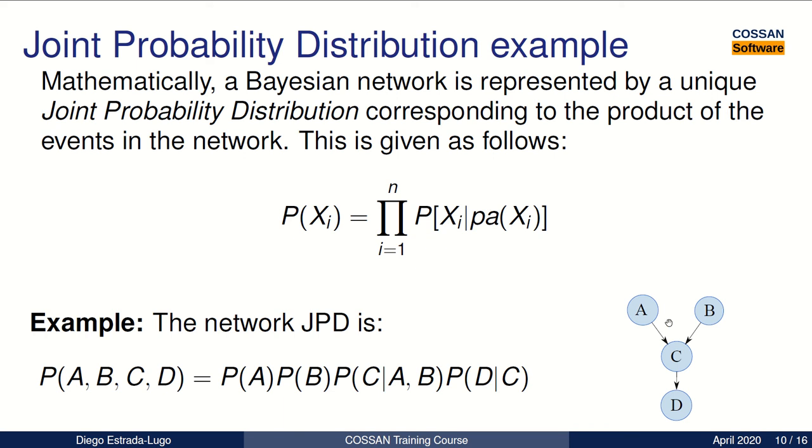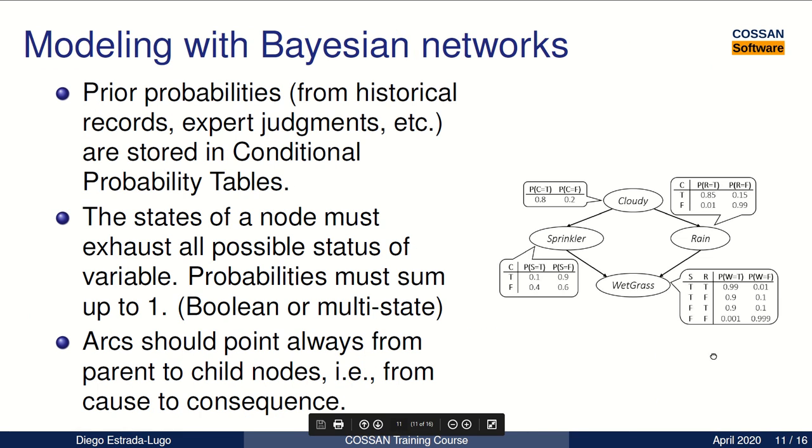As we can see in this example with these four nodes, the joint probability distribution of this network can be given as the probability of the event A times the probability of the event B times the probability of the event C, conditioned to A and B, and times the probability of D, conditioned to its parent C.